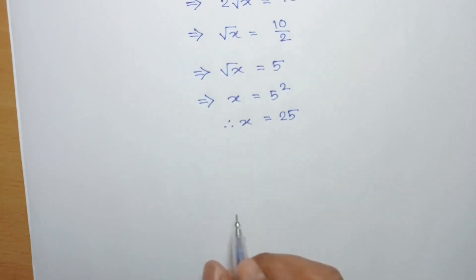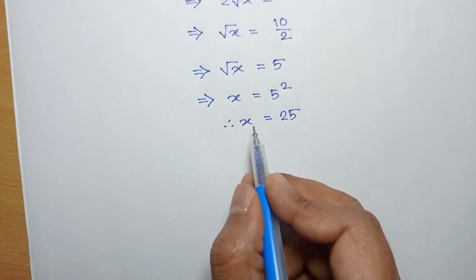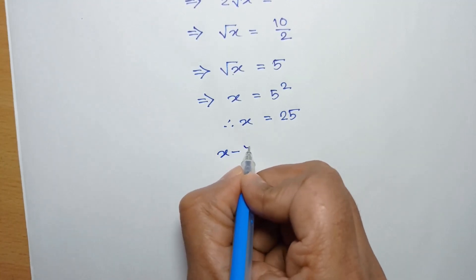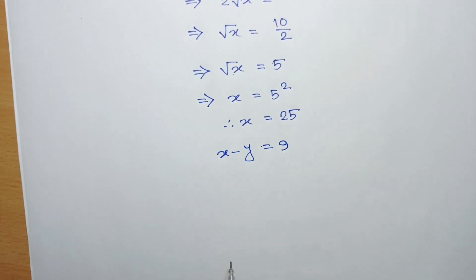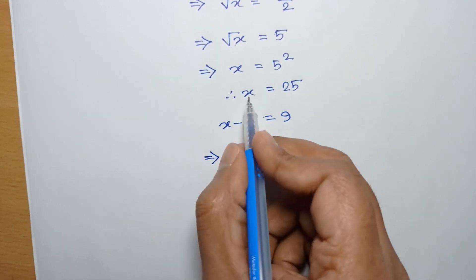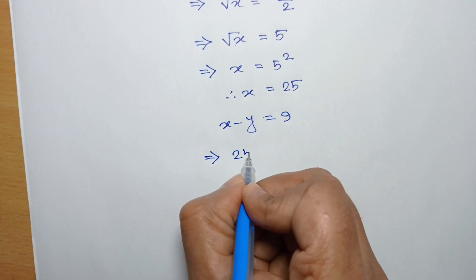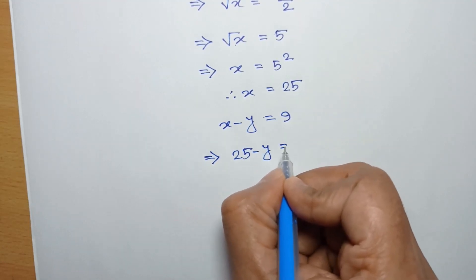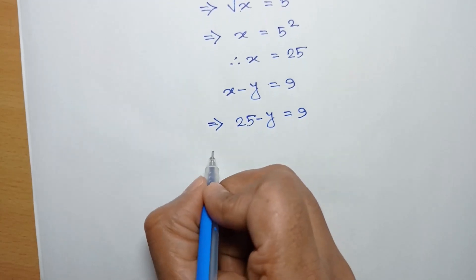Now substituting the value of x in equation 2, from equation 2 x minus y is equal to 9. Substituting x equal to 25, we can write 25 minus y is equal to 9.